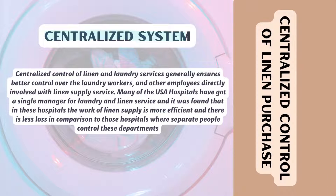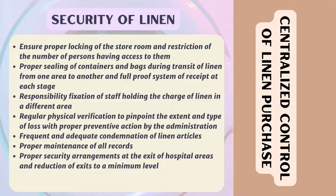A centralized system of linen purchase and standardized control of linen laundry service generally ensures better control over laundry workers and other employees. Many USA hospitals have a single manager for laundry and linen service, and it was found that in these hospitals the work of linen supplies is more efficient with less loss compared to hospitals where separate people control these departments. For security of linen: ensure proper locking of storerooms and limit the number of persons having access; proper sealing of containers and bags during transit; full receipt system at each stage; fixation of responsibility for staff holding charge of linen in different areas; regular physical verification to pinpoint the extent and type of loss; proper preventive action by administration; proper condemnation of linen articles; proper maintenance of all records; and reduction of access to a minimum level.